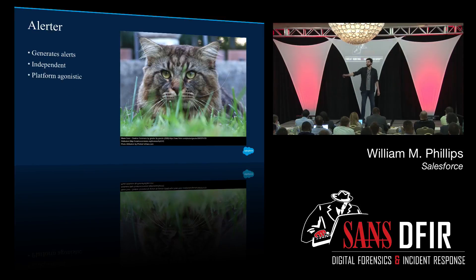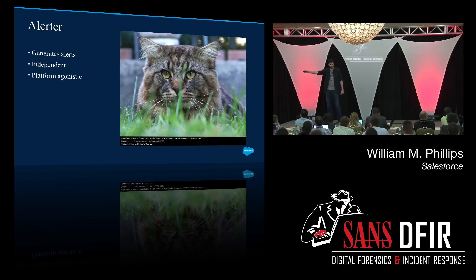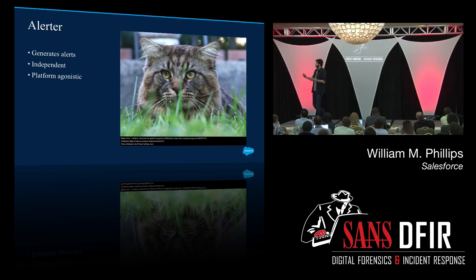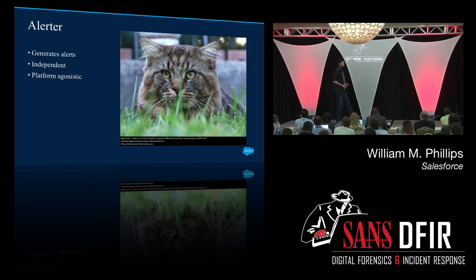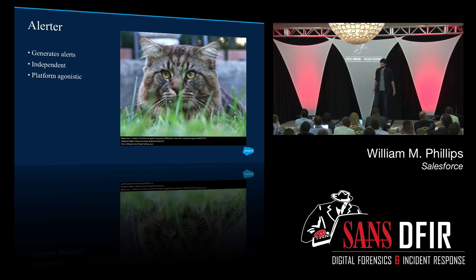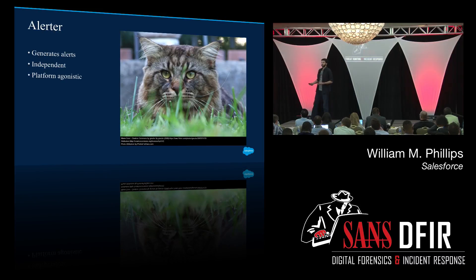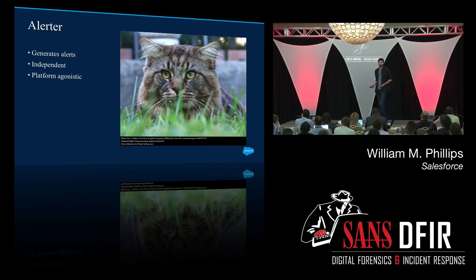The alerter is a really nifty piece of code because it is completely platform agnostic. It generates the alerts, but it's completely independent. We also use it with bash scripts that are sending data to the alerter and into the case management system. It's a component of Overlord, but it can function for any part of your incident response process. And platform agnostic on the back end as well — we're Salesforce, so we use the Salesforce platform, but it's a simple JSON. You can send that to any platform you want — you're changing maybe ten lines of code.